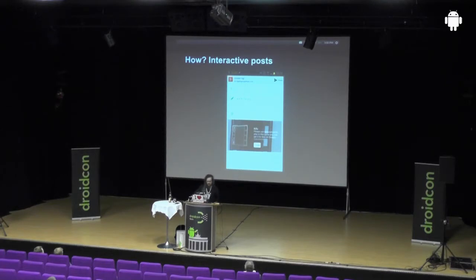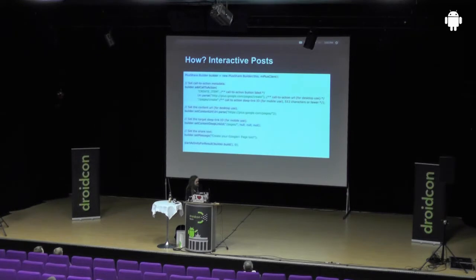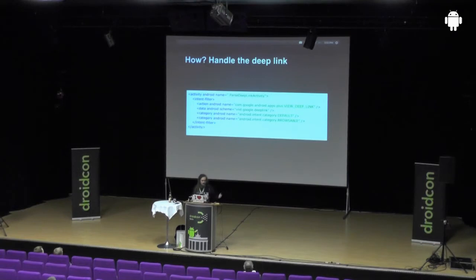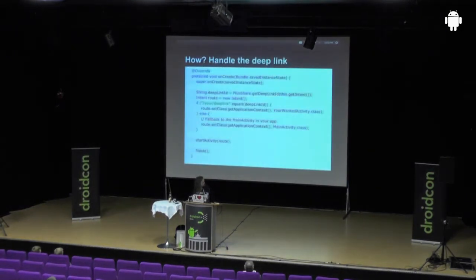That's for sharing — like a Go recording. This is how you implement it — it's fairly easy. There's a builder pattern for that and you just pass the needed stuff. Like, create item is the type, the URL in this case, and the deep link ID. We pass that later when we get it as an intent extra. And then you just create the post — very easy. This is how you pass that in the manifest. It's an intent filter, and you get this action 'com.google.android.apps.plus.deeplink' which you have to catch. Then you get your deep link ID and extract it from the intent.